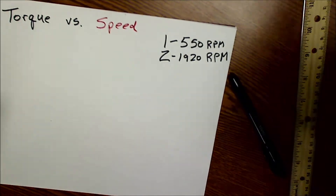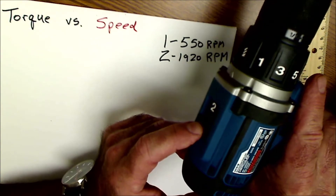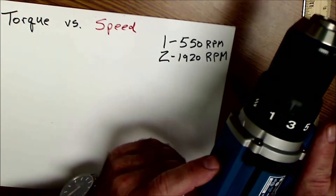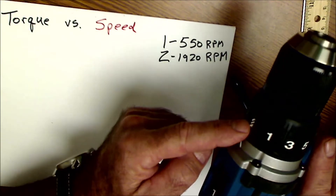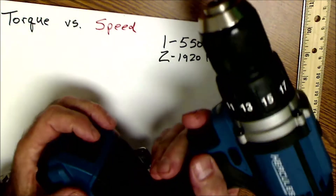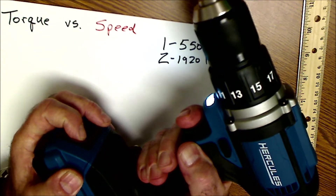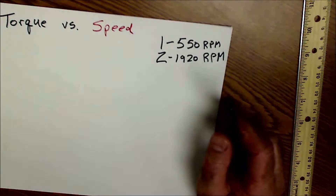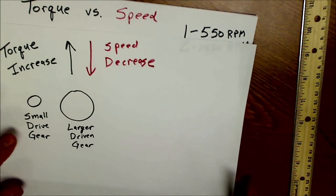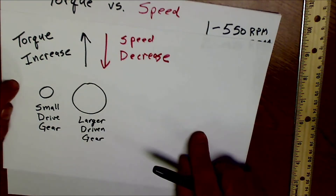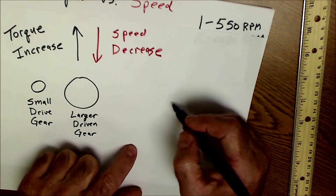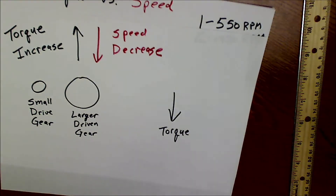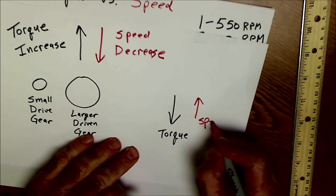The whole point of multiple speed settings is a speed-torque trade-off. On speed one you get about 550 maximum RPM with a lot more torque. On speed two you get up to about 1,920 RPM. Combined with the variable speed trigger, you can pick any speed between zero and 2,000 RPM. As torque increases, speed decreases — and as torque decreases, speed increases.